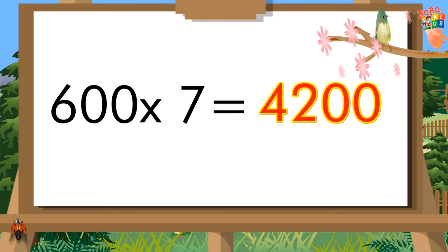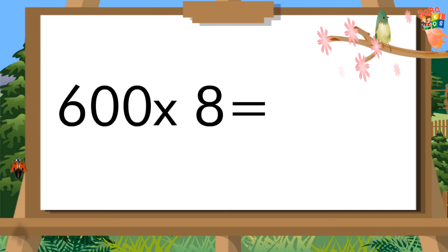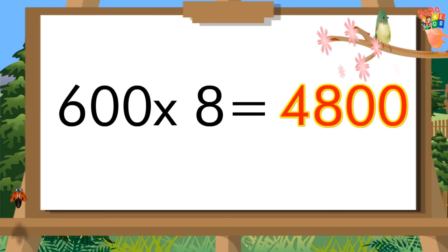600 sevens are 4,200. 600 eights are 4,800.